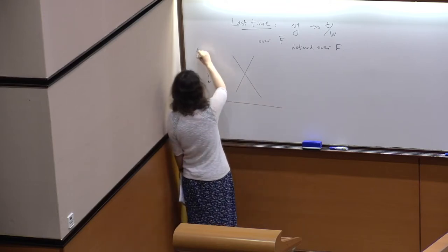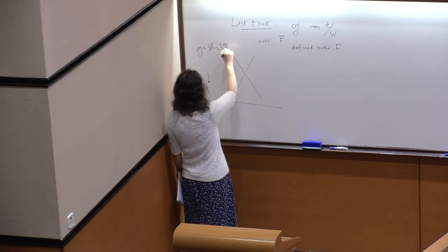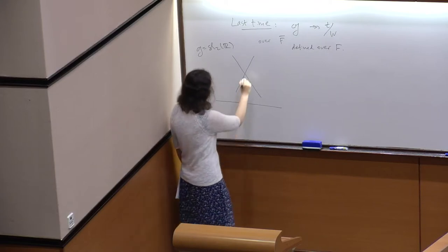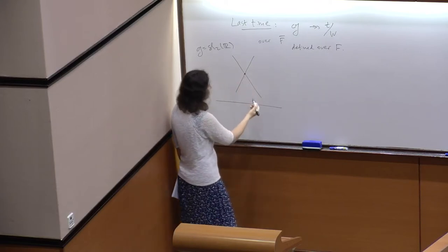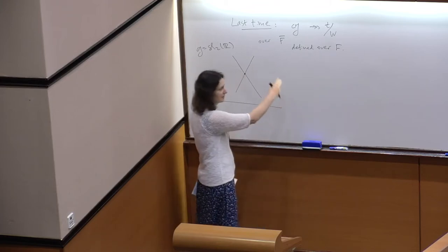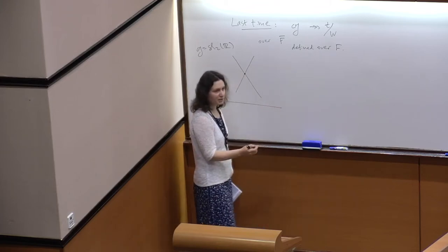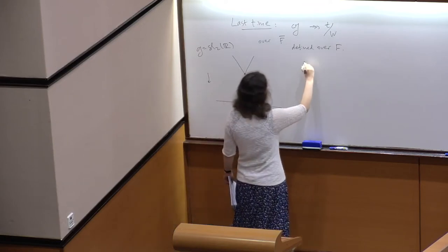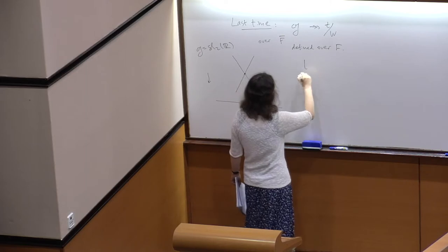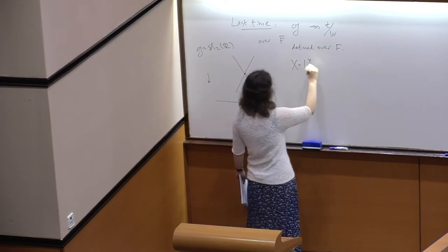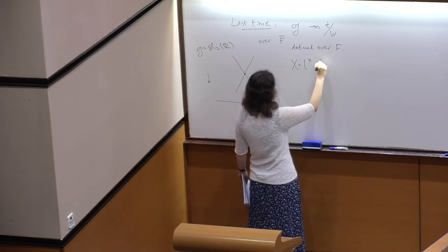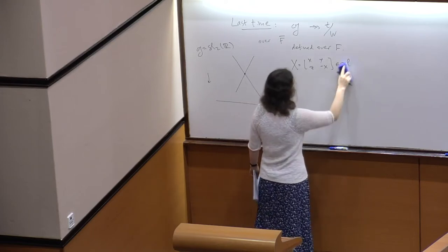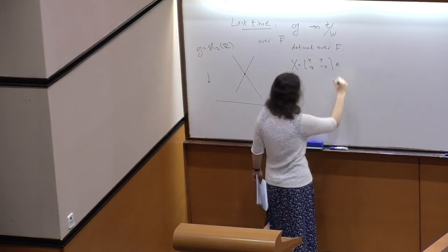An instructive picture to keep in mind is what happens for G equals SL2(R). For SL2 we discussed that the map is given by coefficients of the characteristic polynomial, but since the trace is zero the only meaningful coefficient is the determinant. Let's write an element x in GL2 as a matrix.